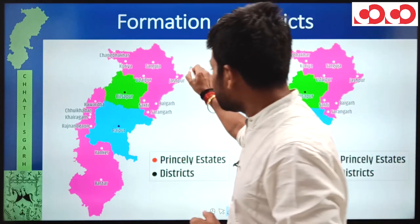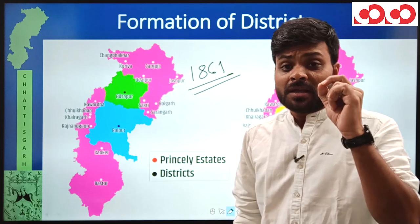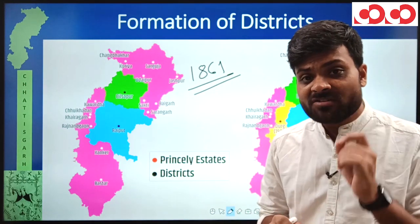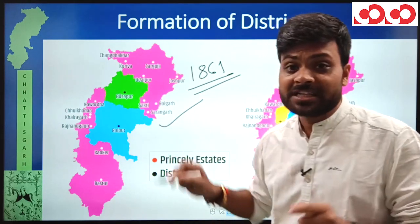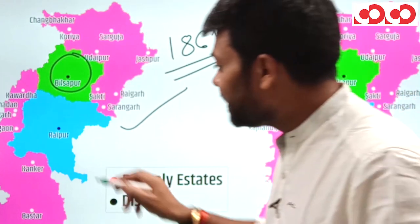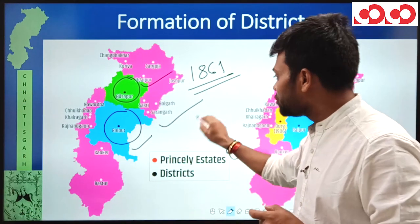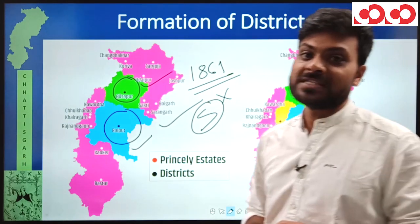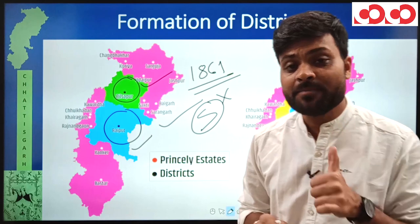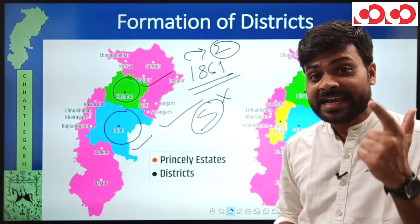The first phase was in 1861, when a new British province called Central Province was formed and Chhattisgarh was included in it. At this time, three districts were created in Chhattisgarh: Bilaspur (shown in green), Raipur (shown in blue), and Sambalpur. Since Sambalpur is not presently part of Chhattisgarh, we consider that two districts were formed — Raipur and Bilaspur.